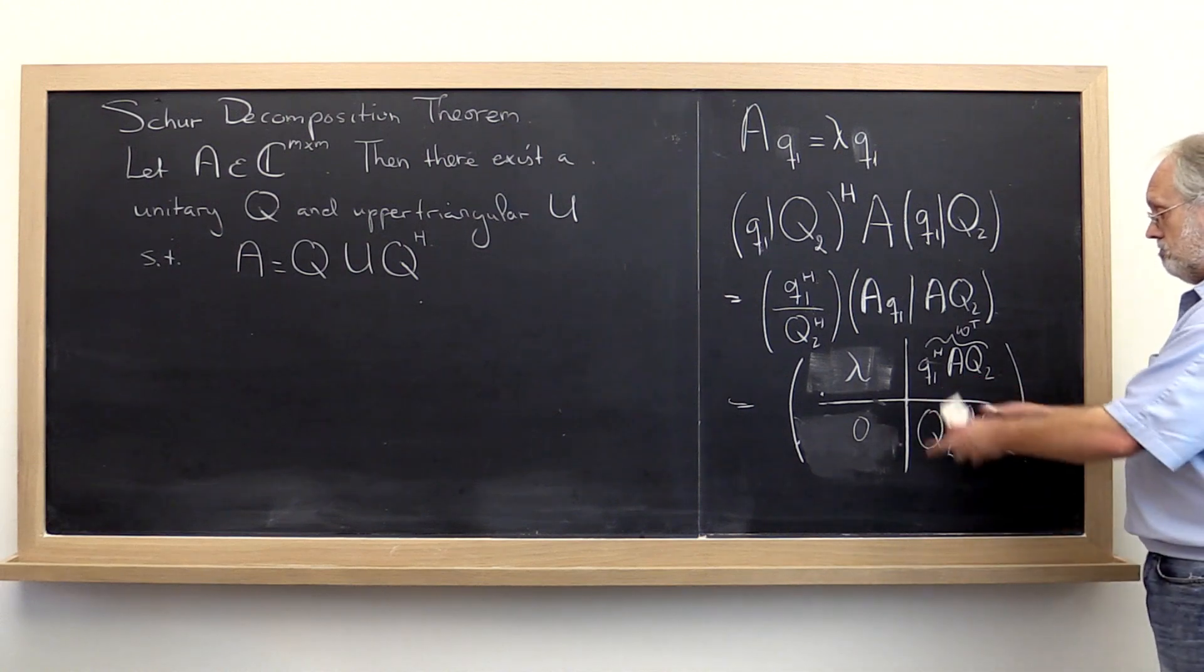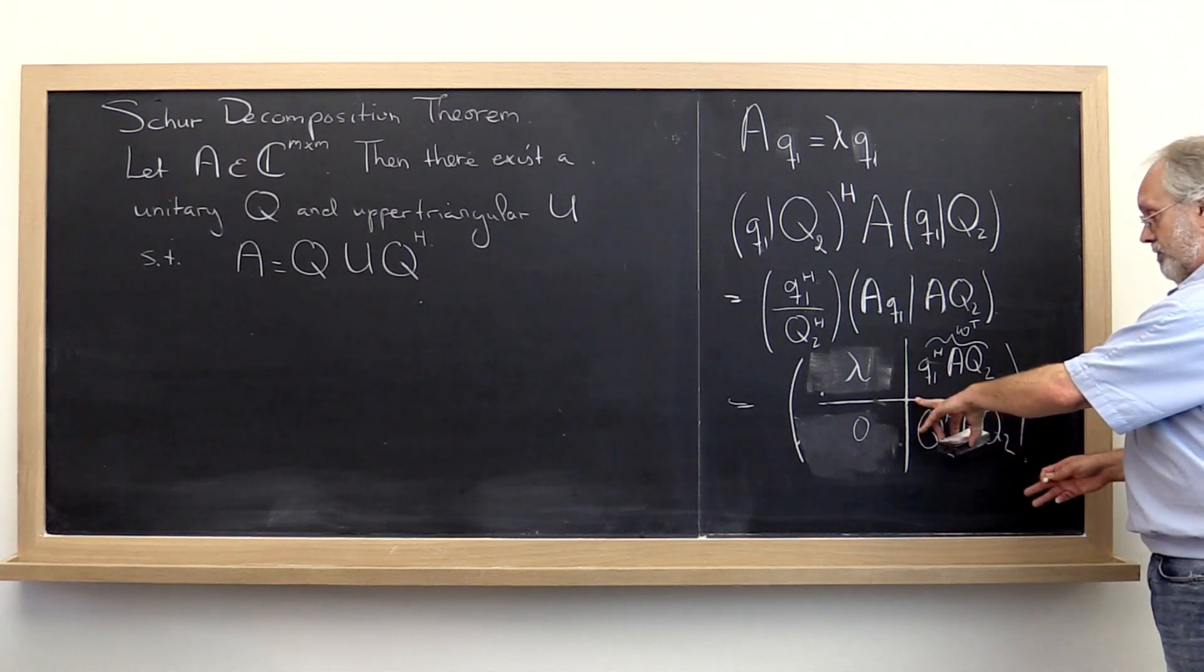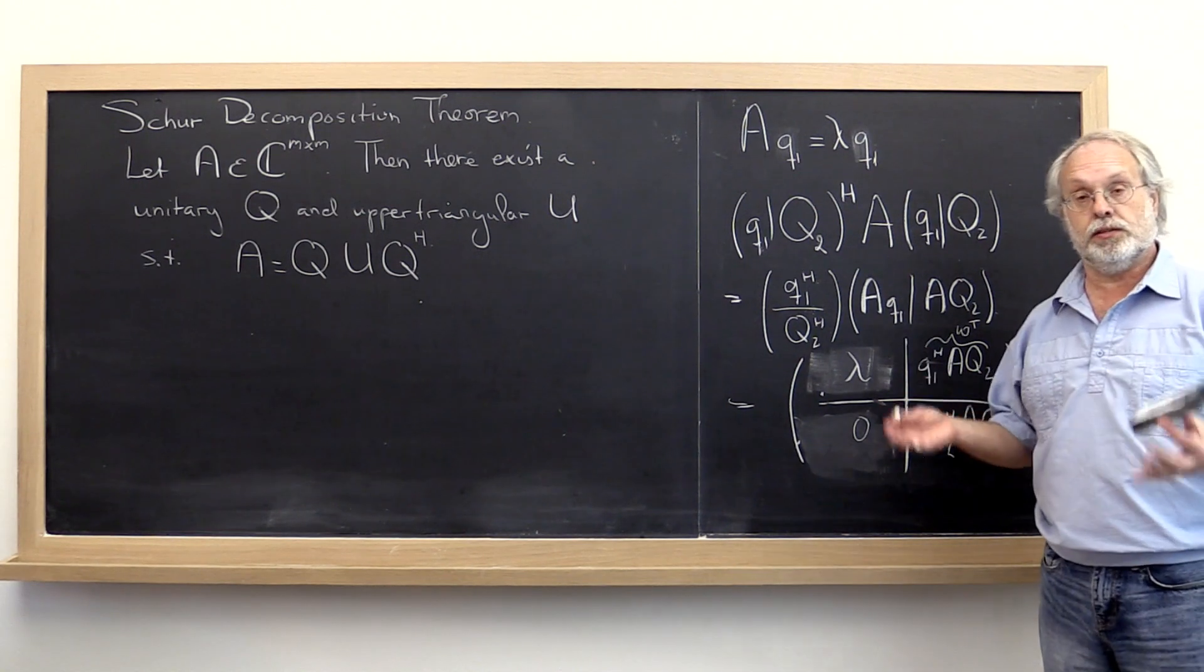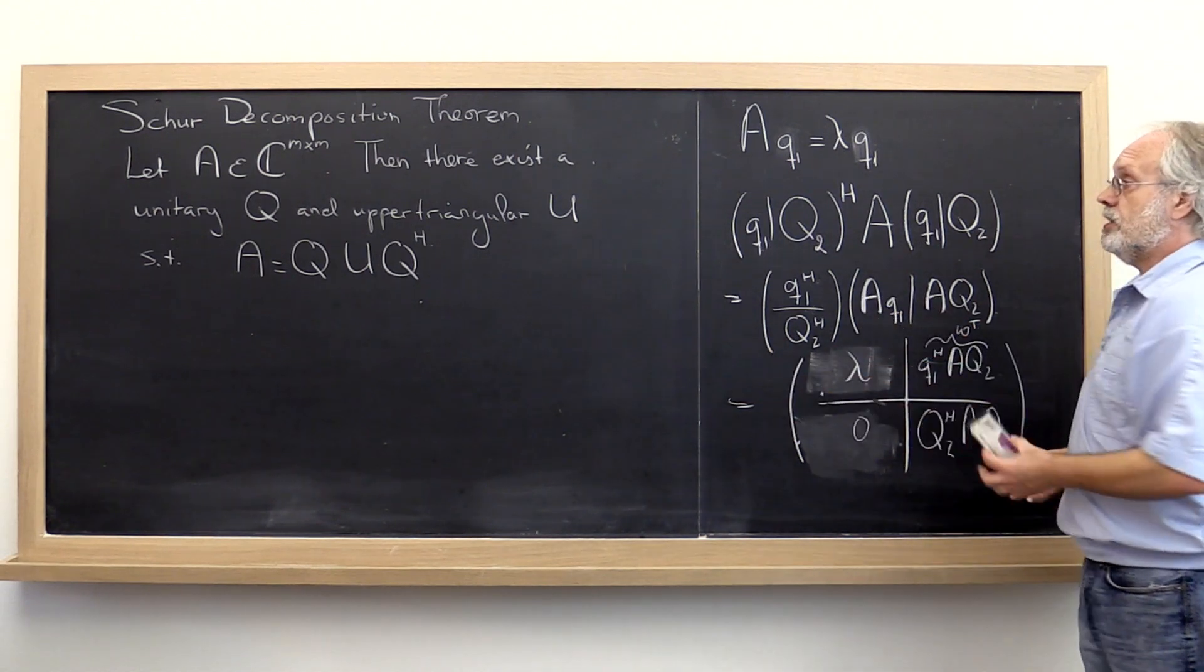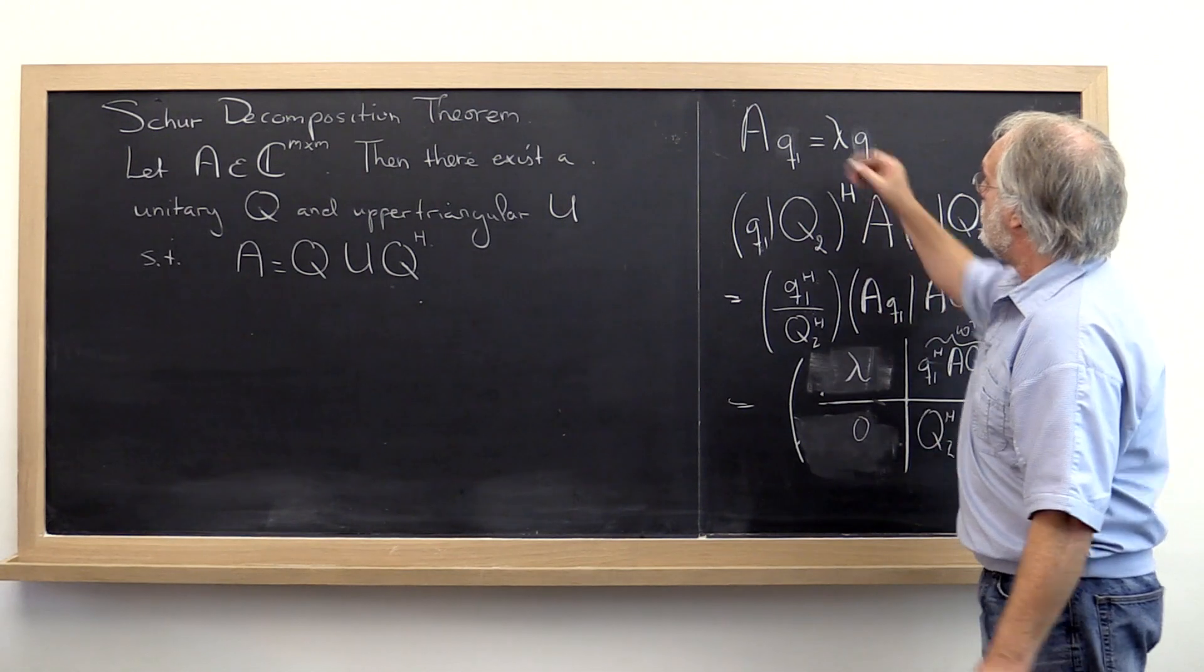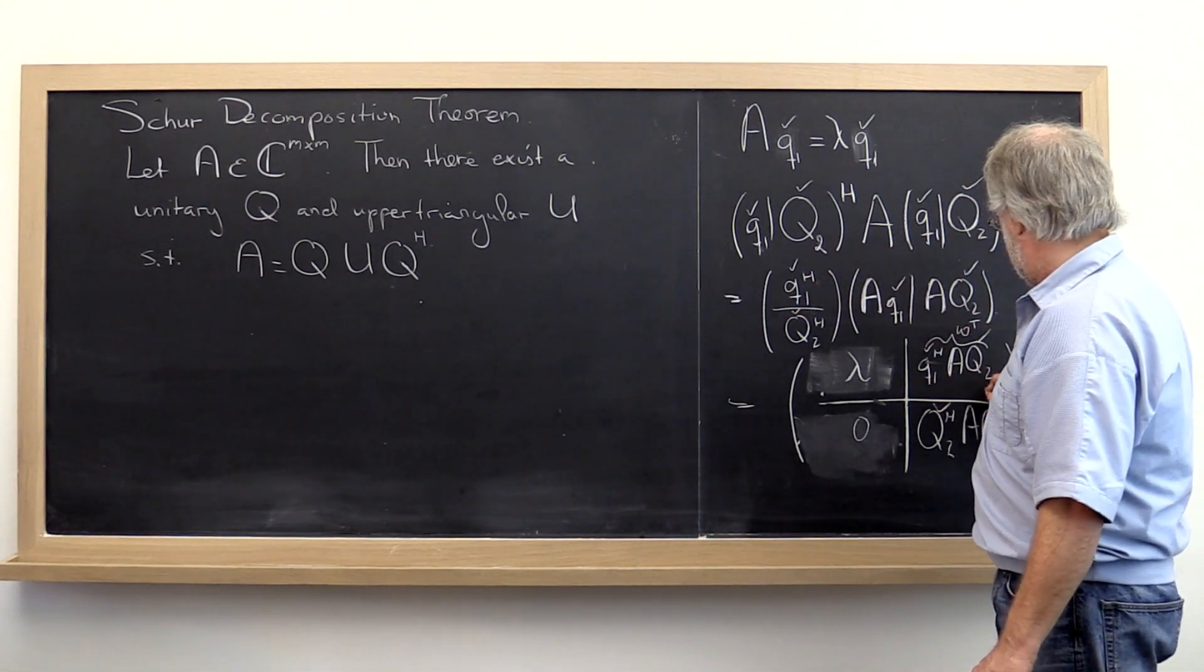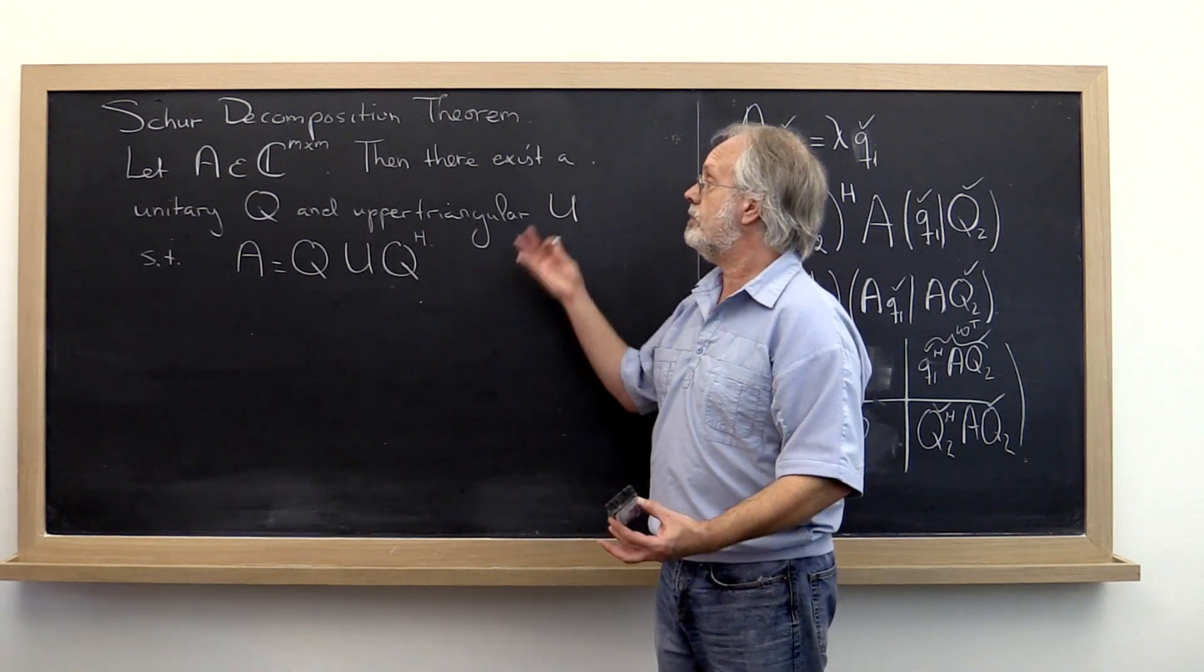And then you can see that maybe we can move forward with this project, this process, and make this submatrix right here eventually upper triangular. And through a proof by induction, you would then get there. And just like when we talked about the singular value decomposition and we accumulated unitary matrices, you can accumulate the unitary matrices into the final q that we really wanted. So this is not the actual q that we want. We probably should have put little checks on here just to distinguish these q's from the final q that we're after. And bingo! Here we have the Schur decomposition theorem.